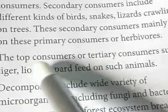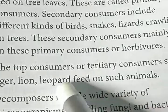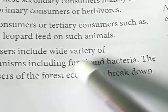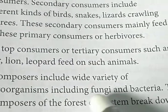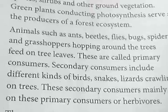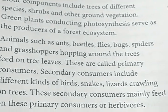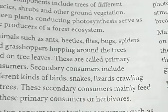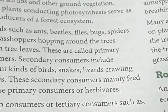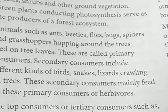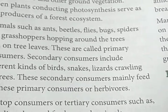The top consumers or tertiary consumers are basically tiger, lion, and leopard, which feed on such animals. Decomposers include a wide variety of microorganisms including fungi and bacteria. In a forest ecosystem, some ants, butterflies, bugs, spiders, and different types of insects hop around the trees and eat the green leaves — they are primary consumers.